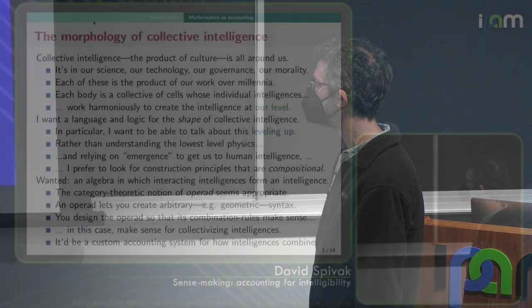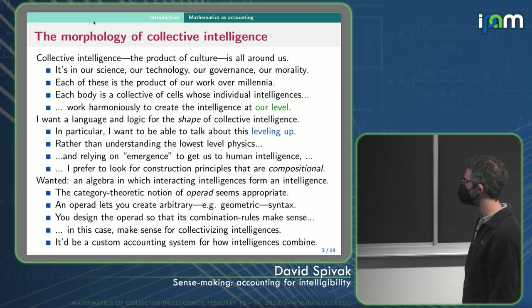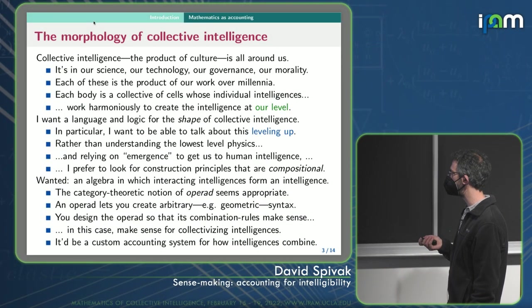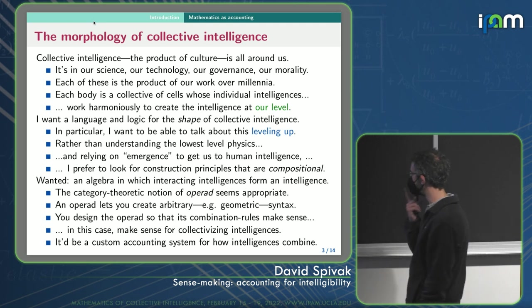So, what do I want? I want an algebra in which interacting intelligence form an intelligence. And I think this category theoretic notion of operad, which is not known enough, I think, seems appropriate.